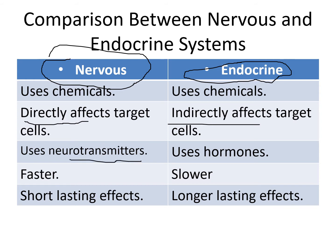In the nervous system, chemicals like neurotransmitters such as acetylcholine are used. The endocrine system uses hormones. As for speed, the nervous system is faster — like email — transmitting through action potentials and secreting neurotransmitters. The endocrine system is slower because hormones get secreted into the bloodstream and eventually reach their target organs. It's sort of like snail mail — you put a stamp on a letter and eventually it gets there.